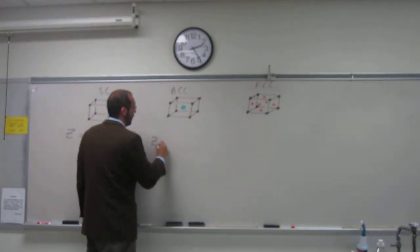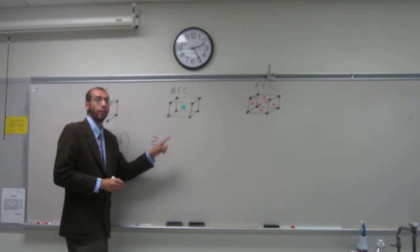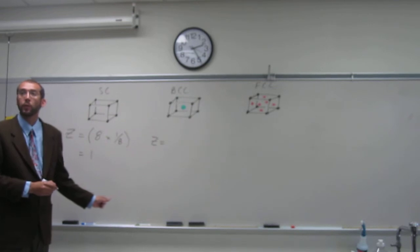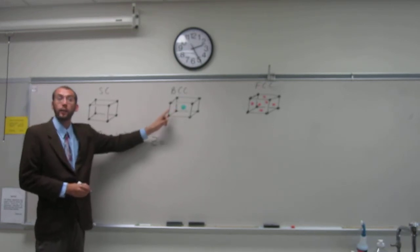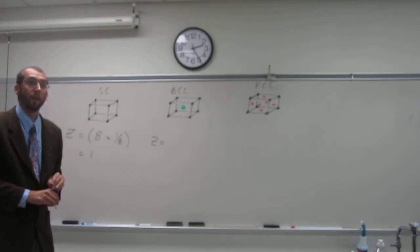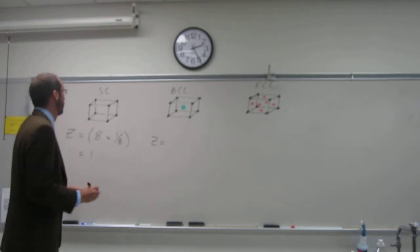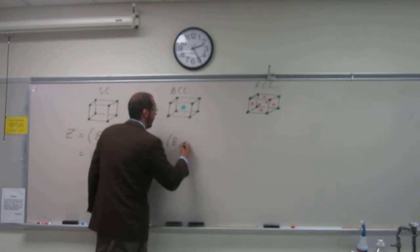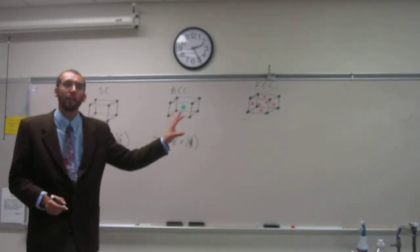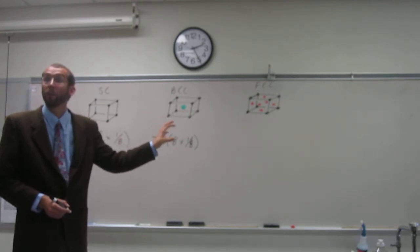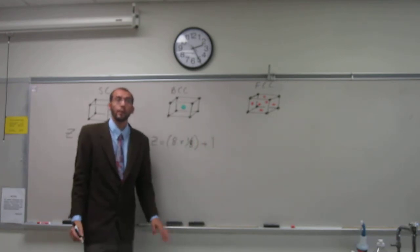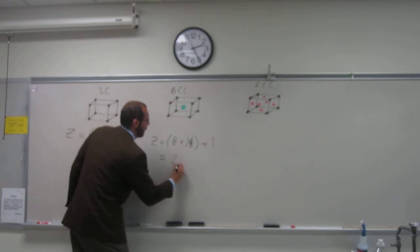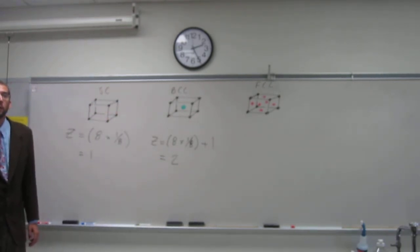For the body-centered cubic, the first part is the same—there are eight corners with one-eighth of each atom within the unit cell, so that's eight times one-eighth. But is there anything else inside? A whole atom in the center, right? So it's eight times one-eighth plus one. Z equals two for body-centered cubic.